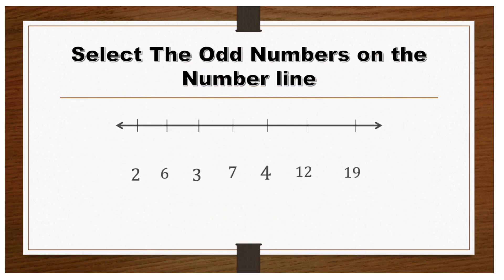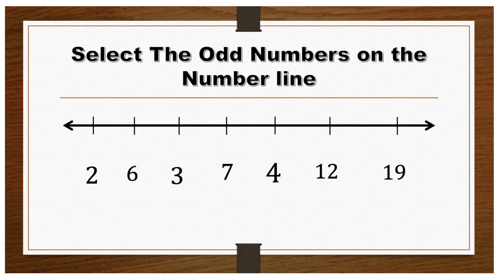Let's look at some examples. We have a number line here and it says select the odd numbers on the number line. The numbers on this number line are 2, 6, 3, 7, 4, 12, and 19. Remember that odd numbers are not divisible by 2, so the odd numbers here are 3, 7, and 19.